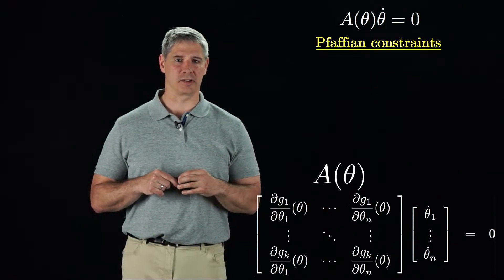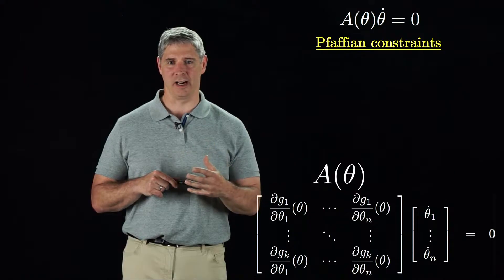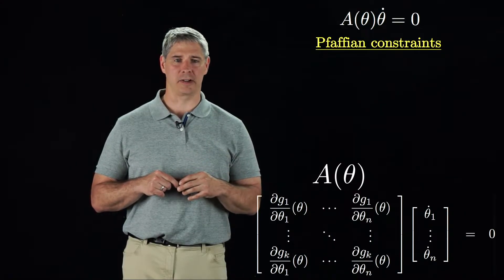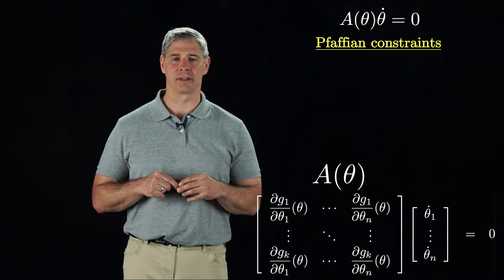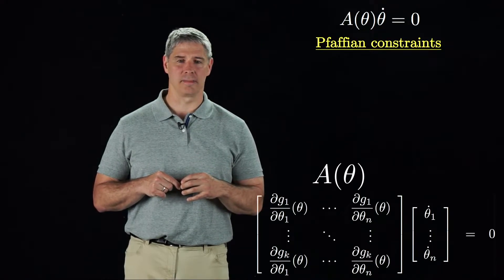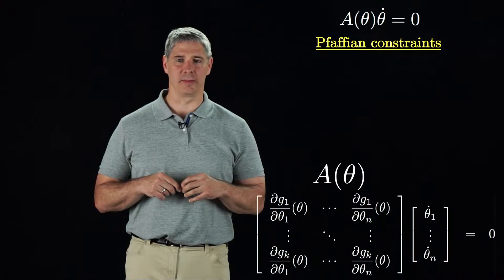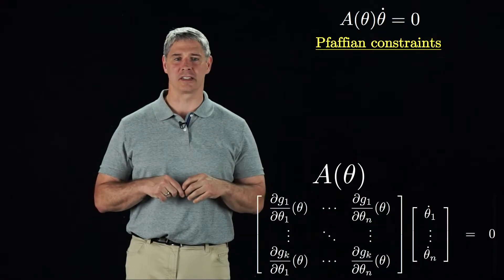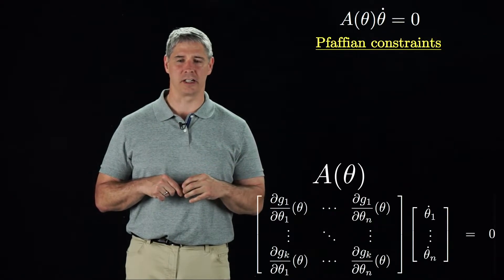Where the A matrix has k rows and n columns. Velocity constraints like this are called Pfaffian constraints. Sometimes we call holonomic constraints integrable constraints, since they are essentially the integral of these velocity constraints.